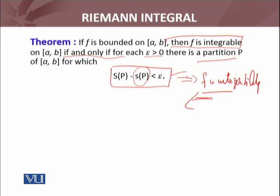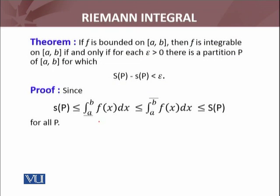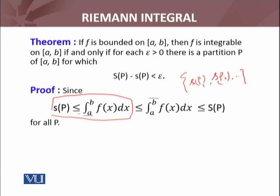From this supposition, I will show that F is integrable. From the definition of upper and lower integrals, we have these inequalities. The lower integral is the supremum of the set containing all lower sums — so the inequality involving the lower integral is true by definition. Similarly, the upper integral is the infimum of the set containing all upper sums. The lower sum is always less than or equal to the upper sum for all partitions P of interval [a, b].